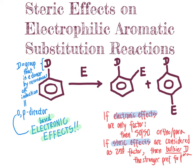That preference becomes stronger the larger the directing group. If the directing group is something like a methyl group, which is relatively compact, you could create substantial amounts of both constitutional isomers. On the other hand, if you put a tert-butyl group there, your product will likely become nearly exclusively the para-product.